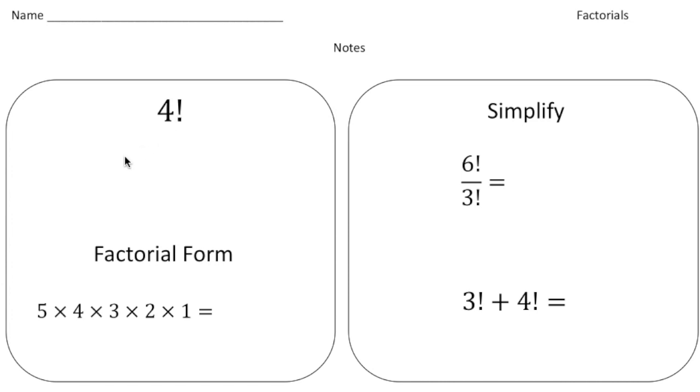And what that means is basically you start with the number 4, and you multiply it by every integer all the way down to 1. So 4 times 3 times 2 times 1, and then you get the answer. So 4 times 3 is 12, times 2 is 24, and 24 times 1 is 24. So 4 factorial equals 24.